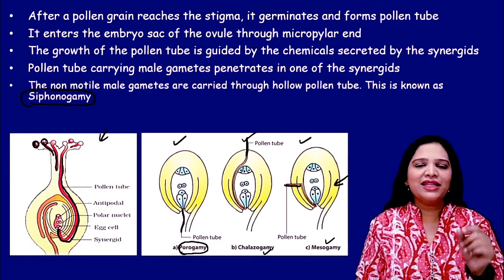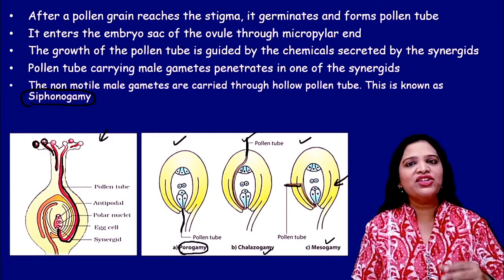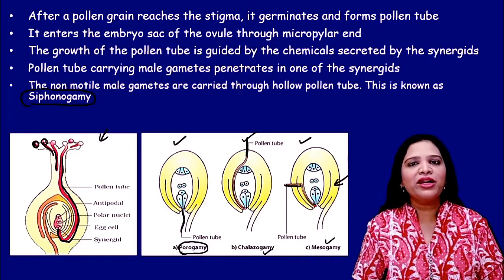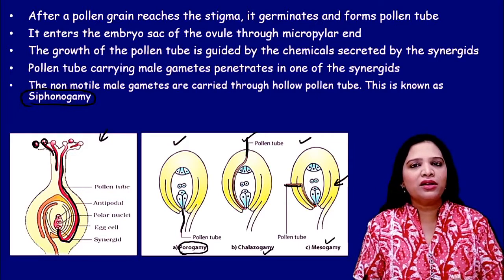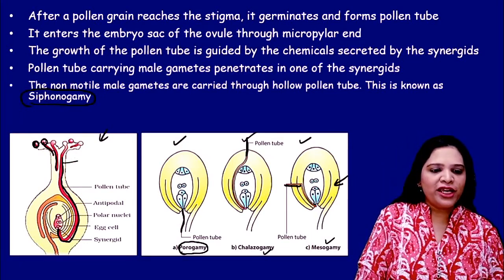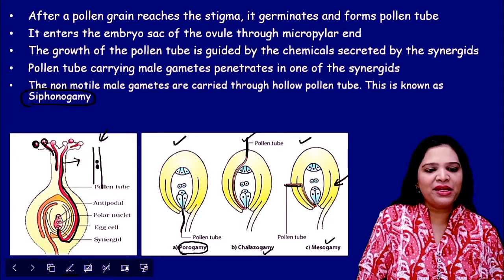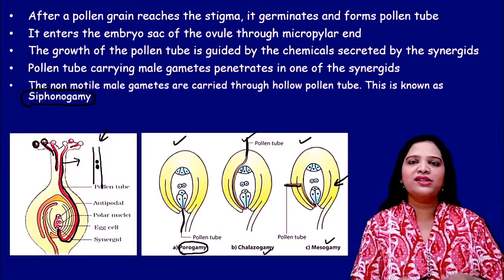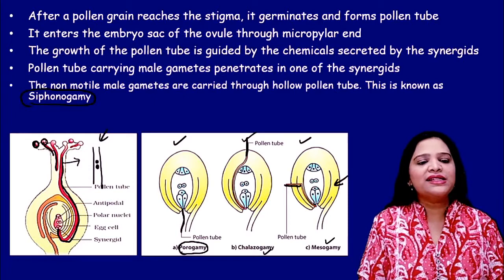The male gametes produced by the angiosperms are non-motile — they don't have a tail like a human sperm, so how do they reach the female region? They reach through the pollen tube. The pollen tube carries the two male gametes and brings them towards the egg as it grows — this process is called siphonogamy.